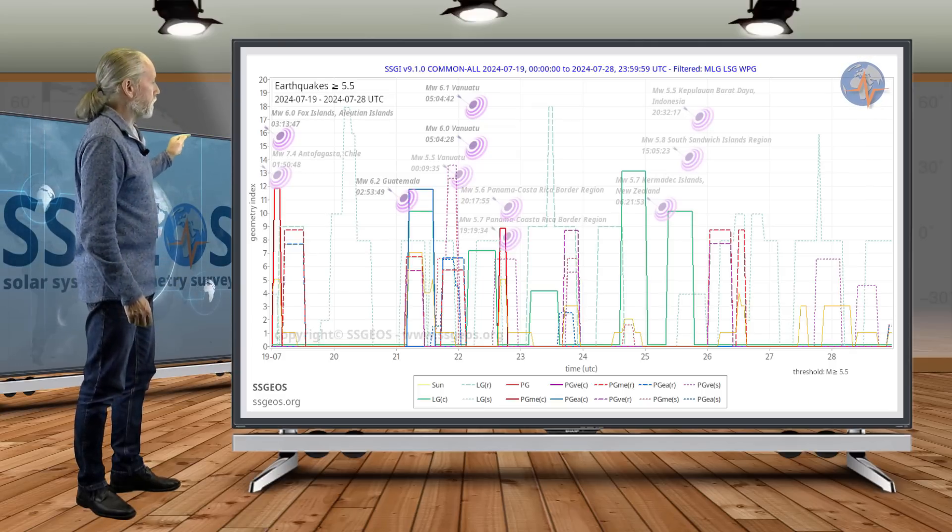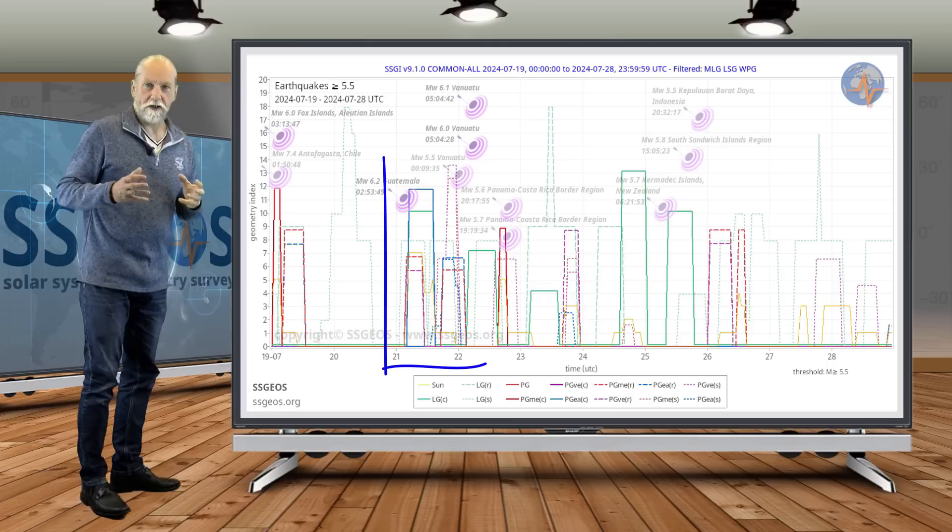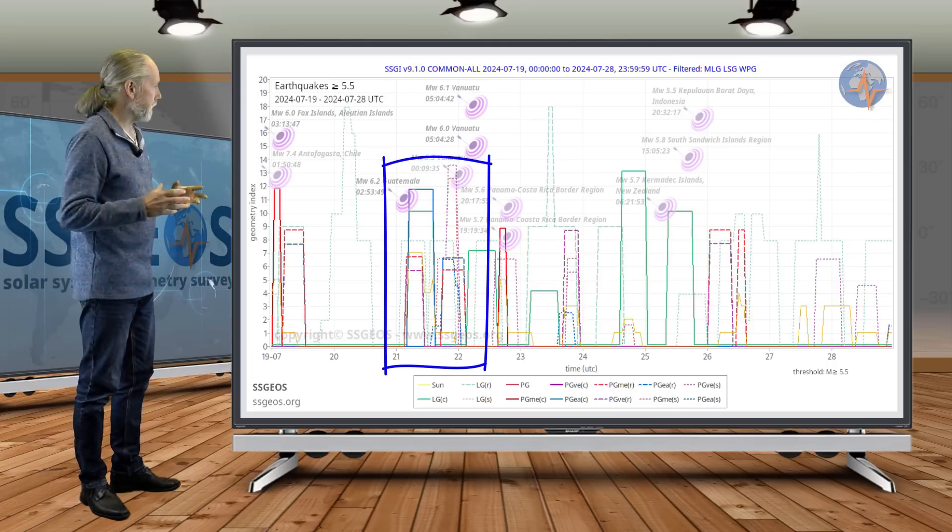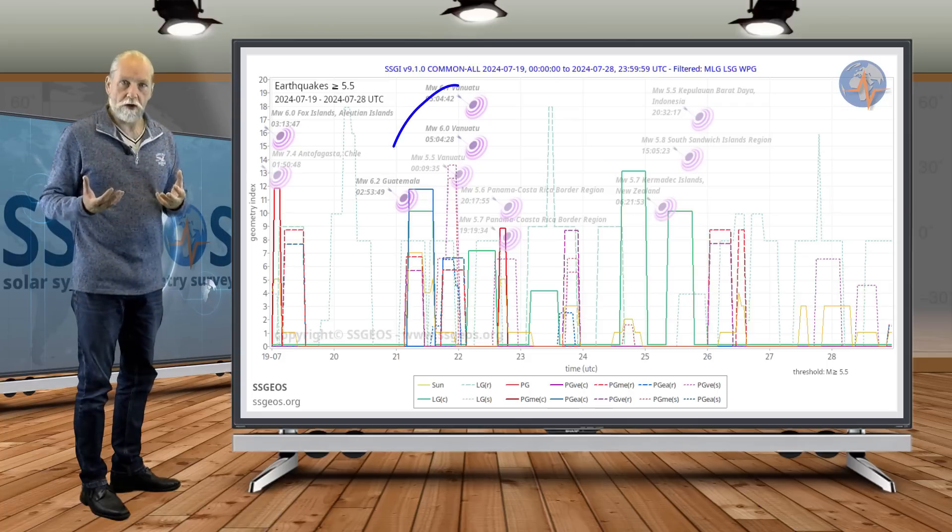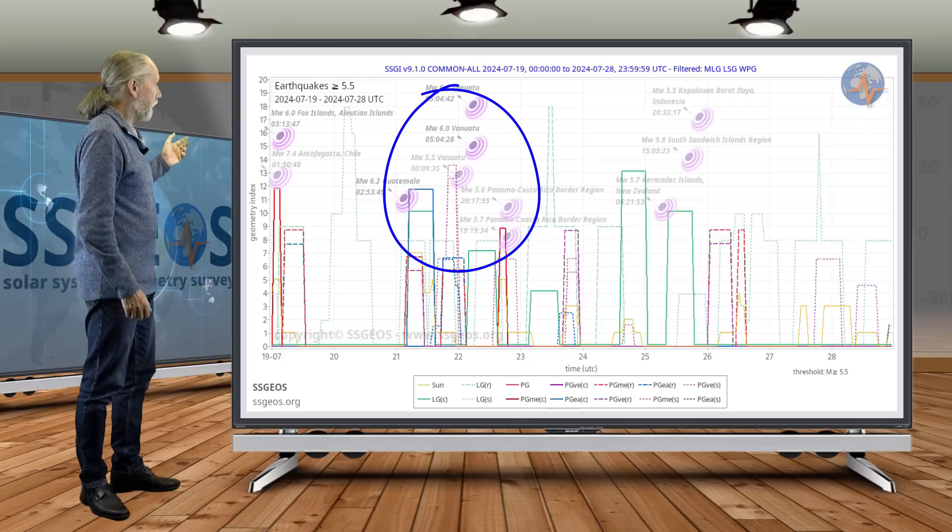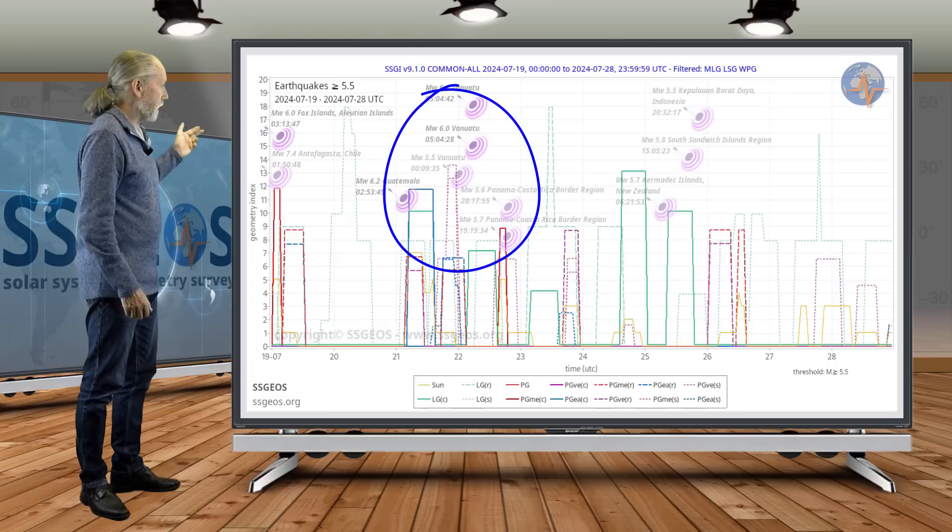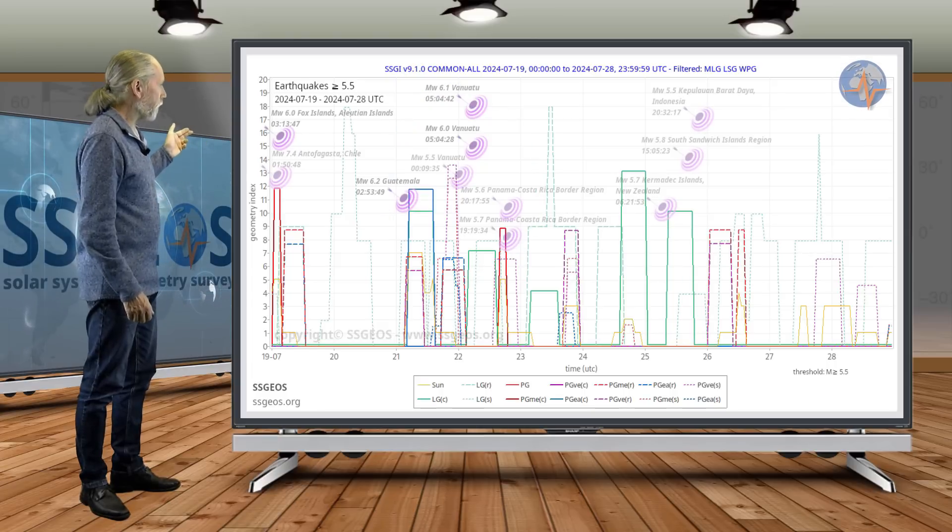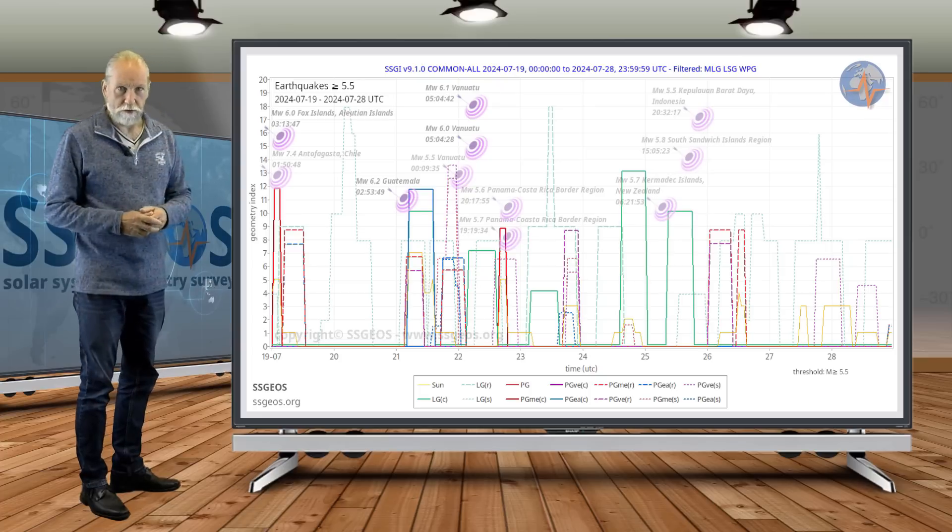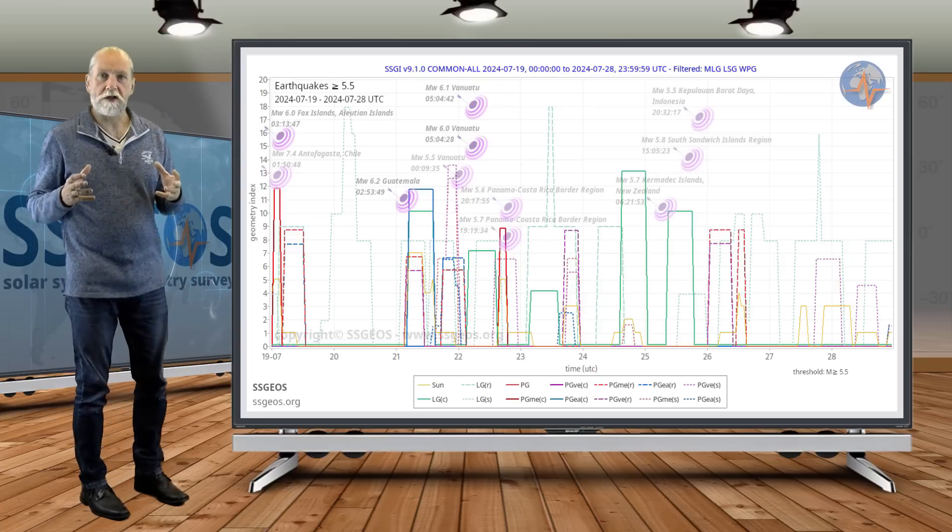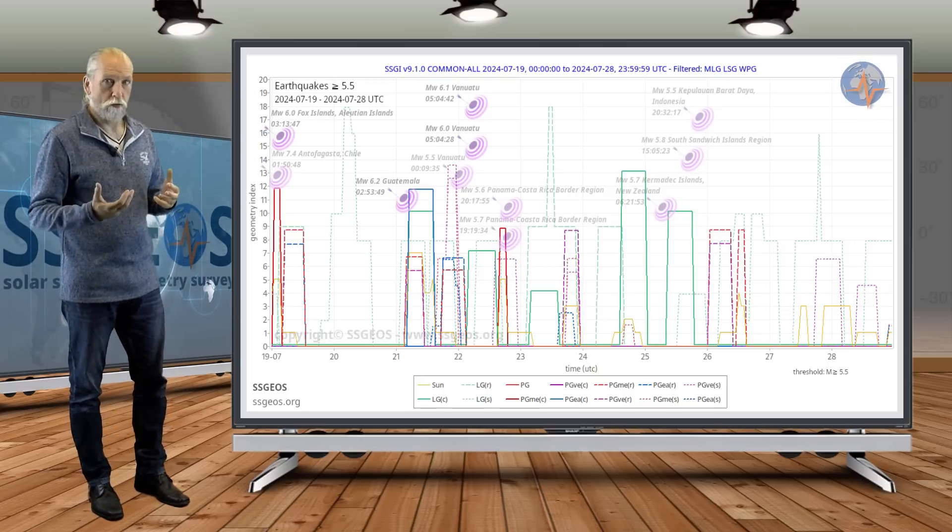On the 22nd of July, we see the geometry I discussed - the convergence with the full moon. We see an obvious clustering of strong earthquakes: three magnitude 6 earthquakes in Guatemala and Guanajuato, and also 5.7, 5.6 at the Panama-Costa Rica border region. This is an obvious clustering at the time of that convergence of critical planetary and lunar geometry.